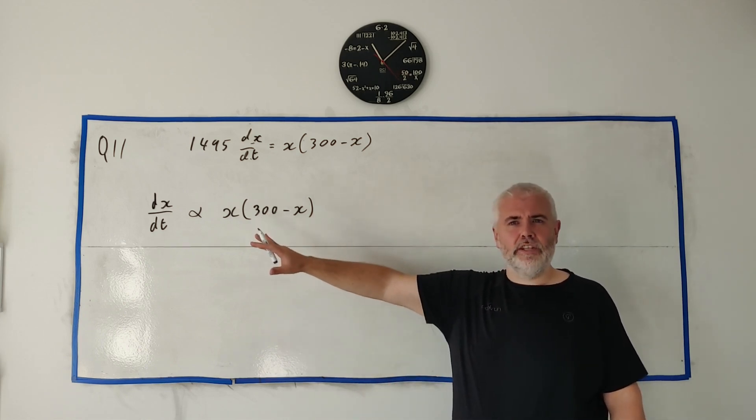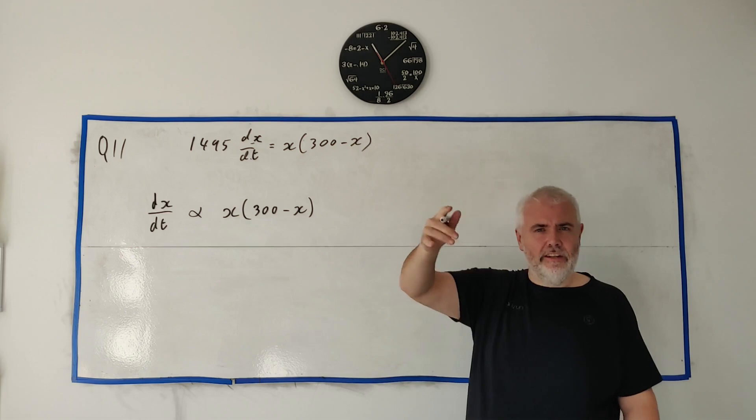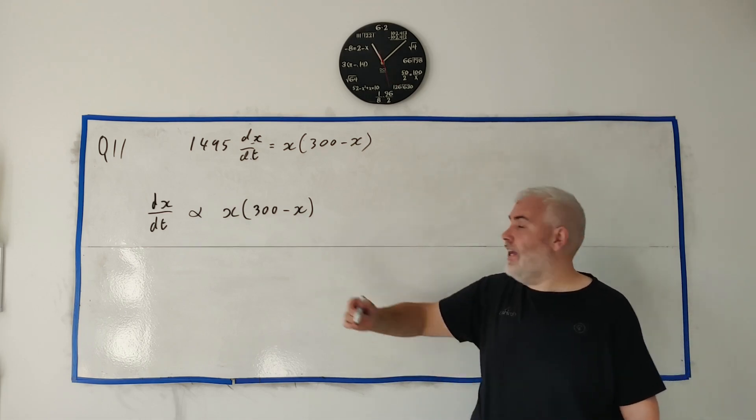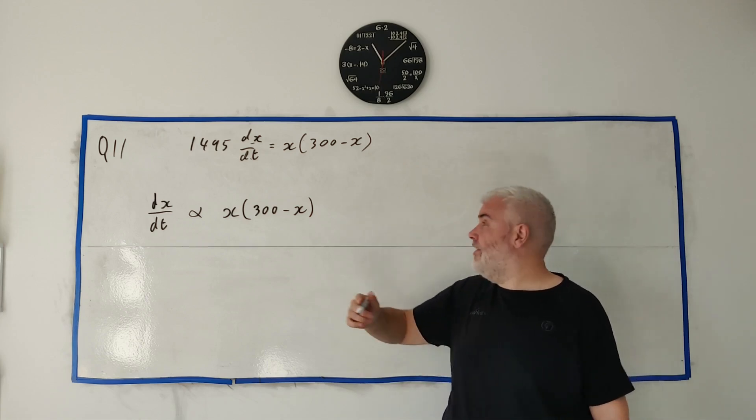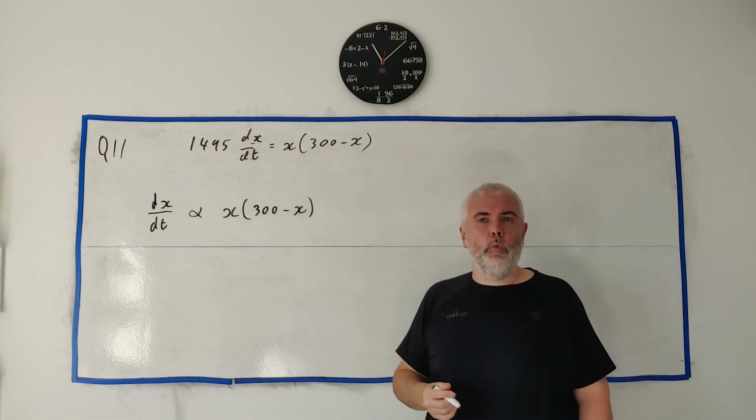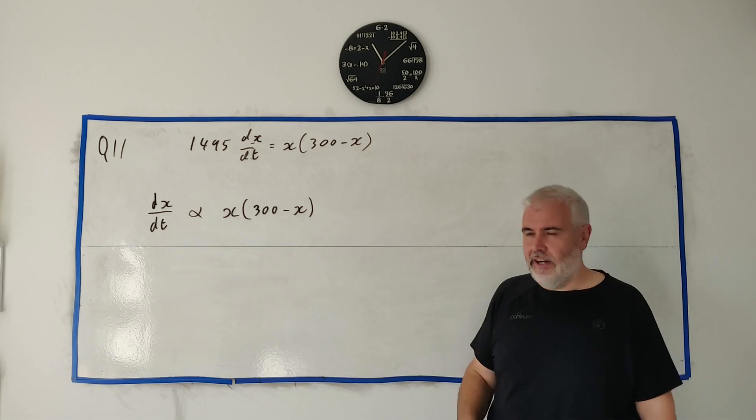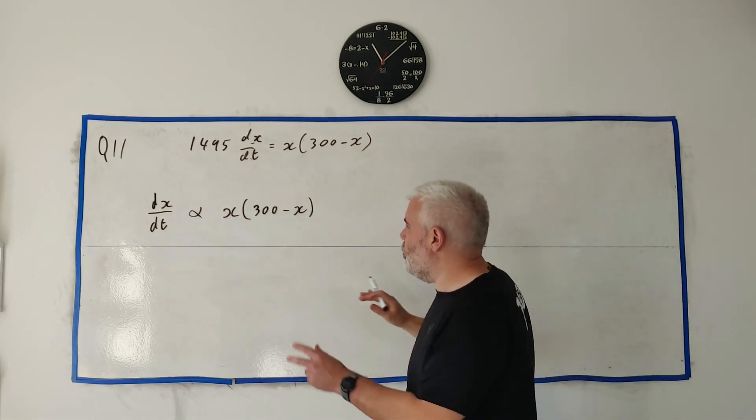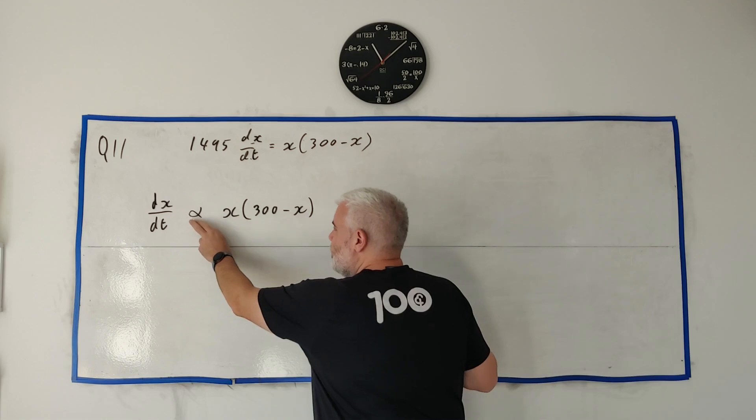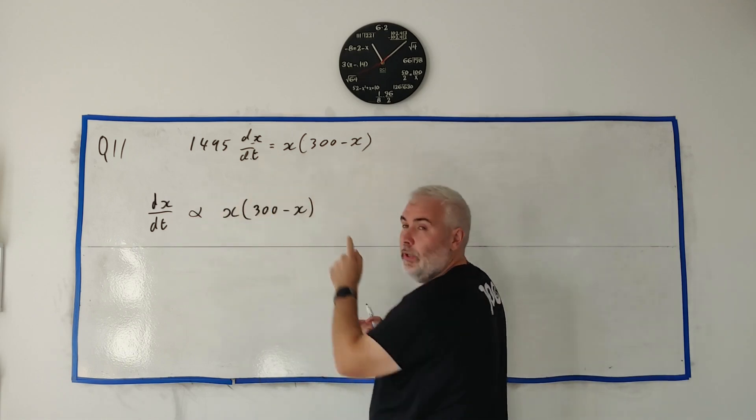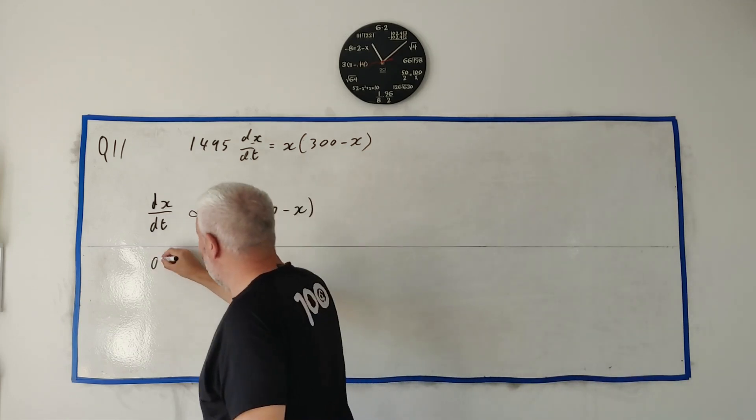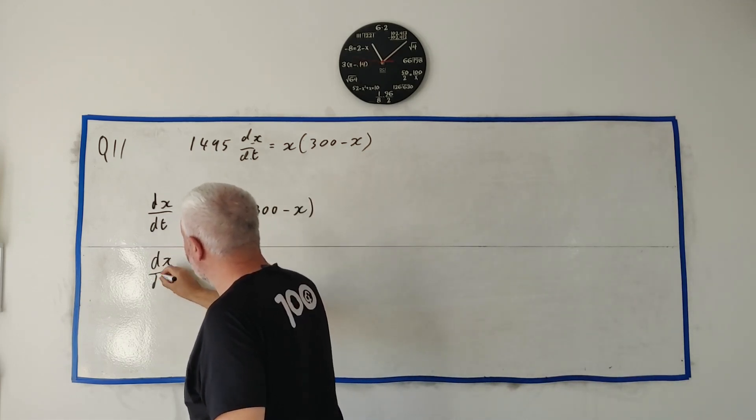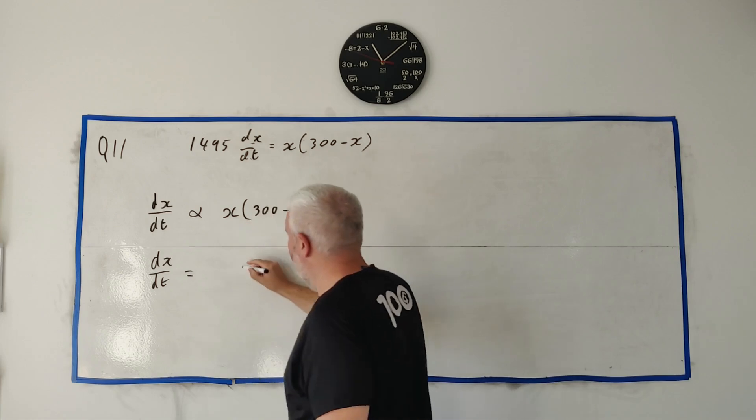And this is the main part of the question. They then tell us some numbers. They tell us dX/dT is 0.2 and X is equal to 1 when time is 0. So, the starting time. Okay, so how do we turn this into an equation? How do we turn proportional into an equals? That's really what you're being asked to remember here.